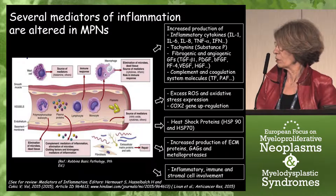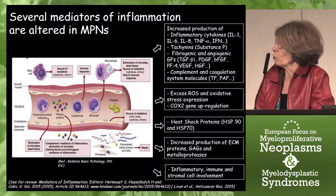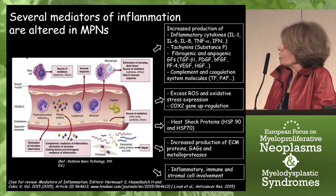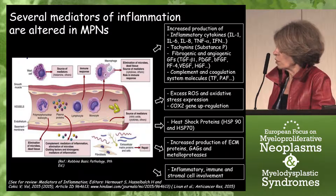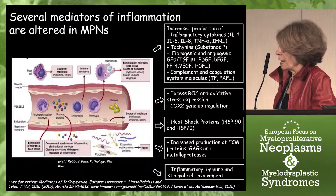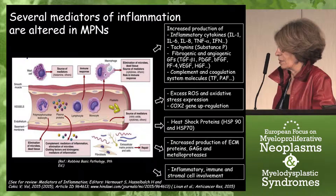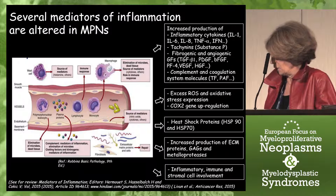As reviewed in a recent issue of Mediators of Inflammation, several mediators of inflammation are altered in myeloproliferative neoplasm — especially an increased production of inflammatory cytokines, of tachykinins, and of fibrogenic and angiogenic growth factors, as well as molecules of the complement and coagulation system. There is also an excess of ROS and oxidative stress expression, associated with an up-regulation of COX2 gene, an increased heat shock protein expression, an increased production of extracellular matrix components, glycosaminoglycans, and metalloproteases, and a high involvement of inflammatory immune and stromal cells in those pathologies.